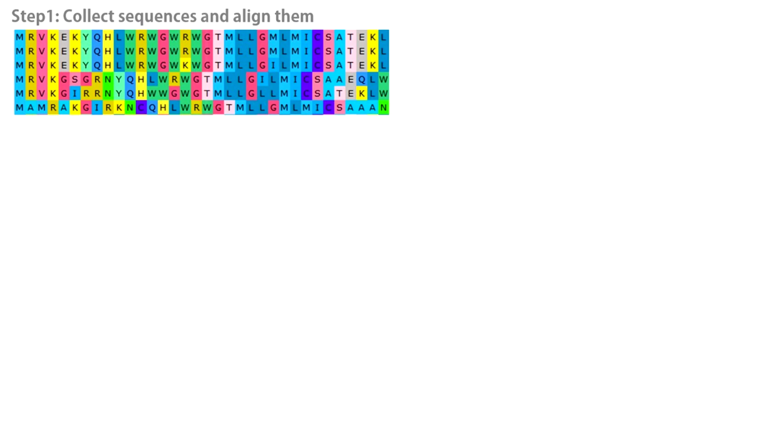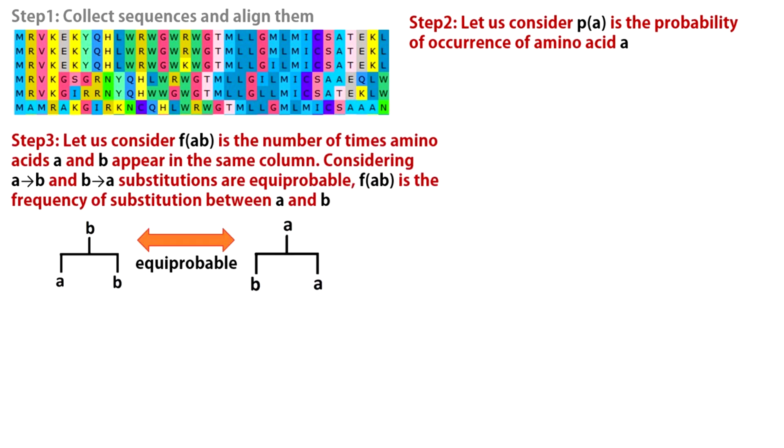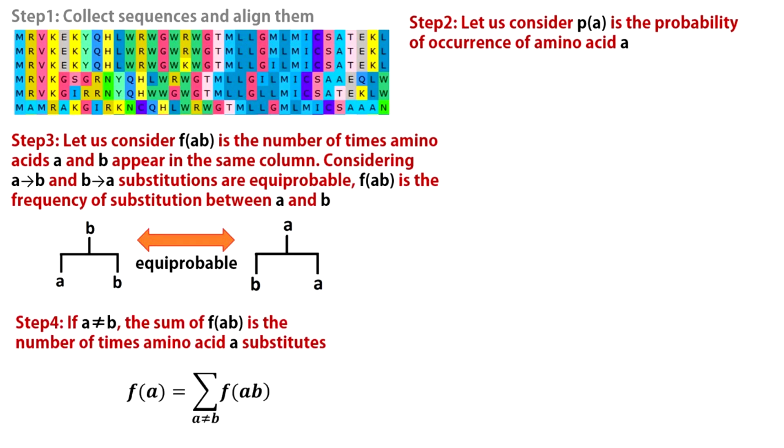In order to calculate this, first we need an alignment. Imagine any two amino acids A and B. If they are included in the same alignment column, we consider either A to B or B to A substitution has occurred. We first calculate the probability of occurrence of amino acid A. This is just the relative frequency of occurrence of that amino acid over the entire alignment. Second step is to calculate the number of times A to B or B to A substitution has occurred. This is FAB. Third step is to calculate the number of times A gets substituted into any other amino acid. This is given by this expression.